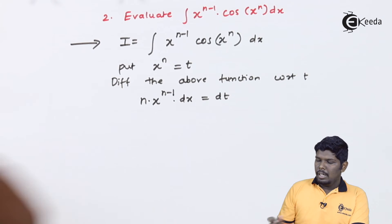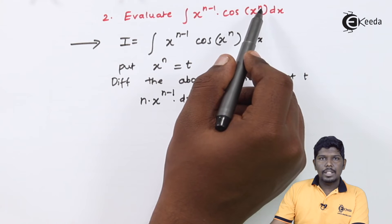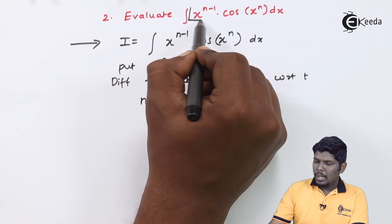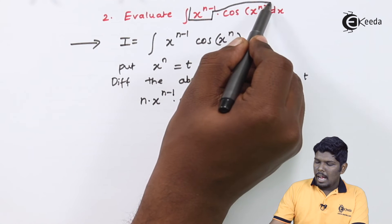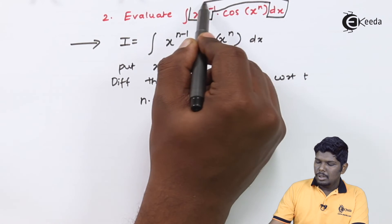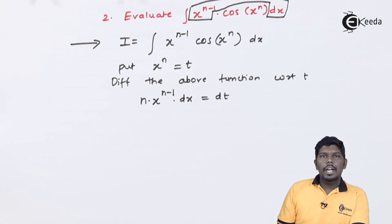Further we need to check after substituting x raise to n as t, the remaining part that is x raise to n minus 1 and the value of dx should be converted in terms of dt.